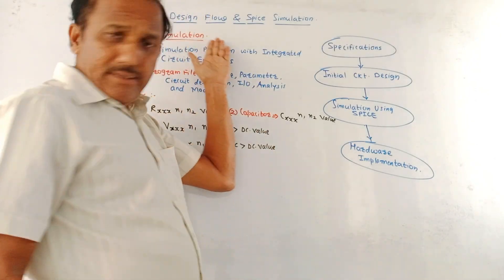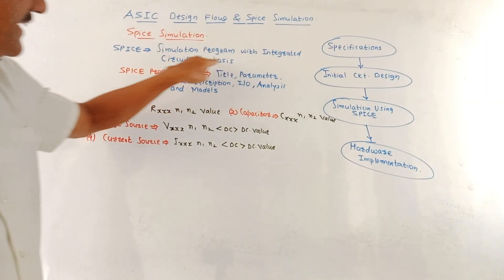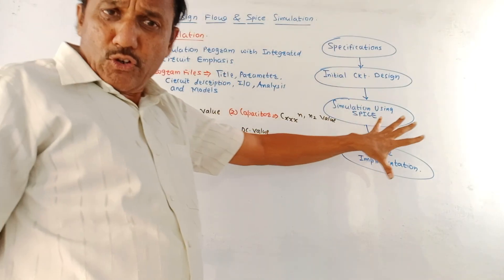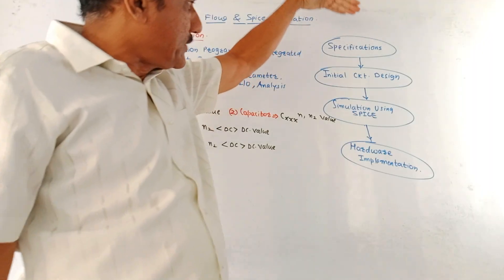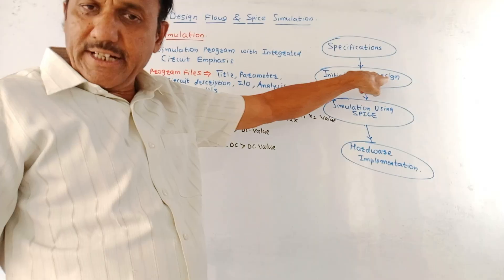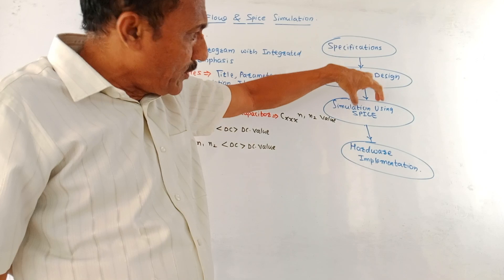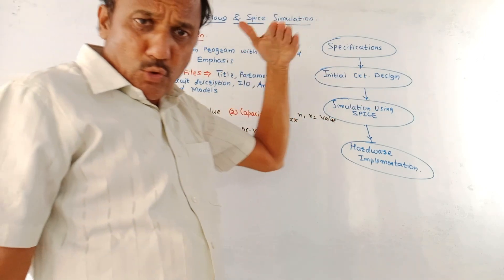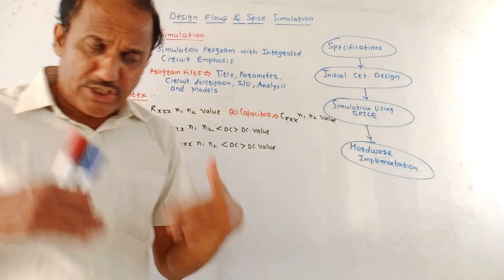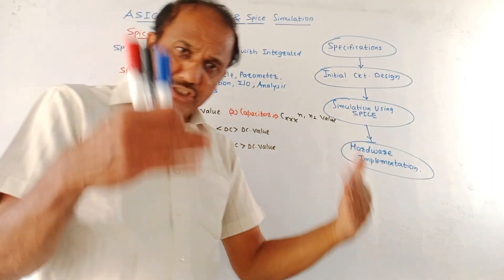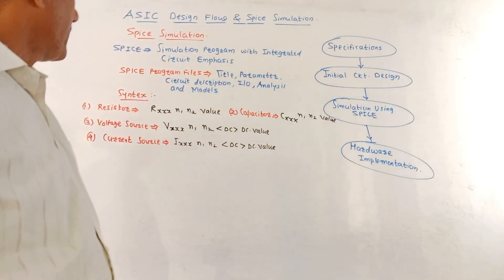Next part is SPICE simulation. Basically, SPICE stands for simulation program with integrated circuit emphasis. This is the flow graph for SPICE simulation. First step, as usual, we have to enter the design specifications. Then initial circuit design is done in the next step. Then simulation is performed using SPICE. The different codes are used that we are going to discuss. Many times after this, the circuit is checked for any corrections. If there are corrections or if there are errors, then correction is done. And last step is hardware implementation after this simulation.